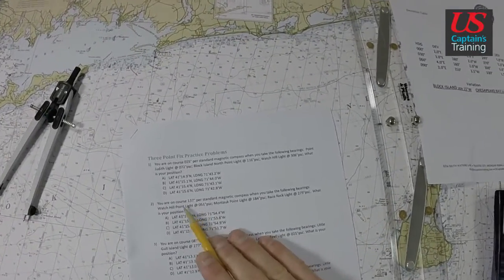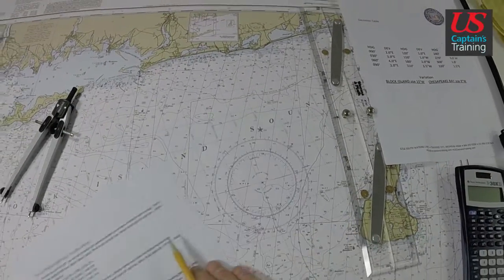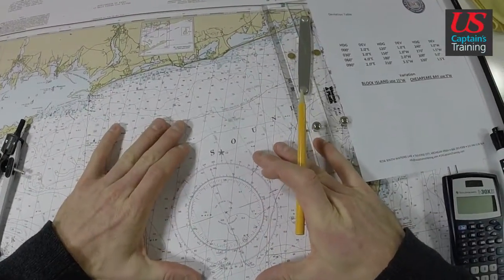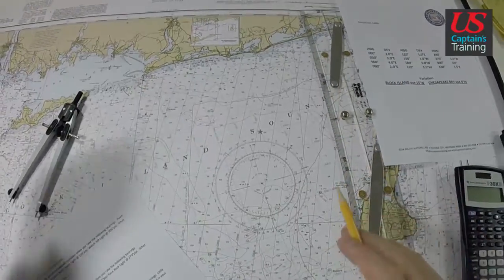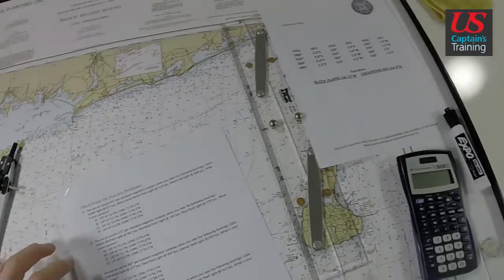So first we need to correct all of these compass bearings to true bearings, then we can plot them on the compass rose and transfer them to the chart and find our position.